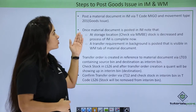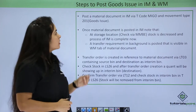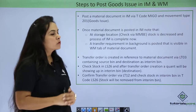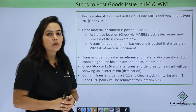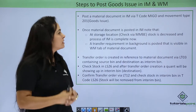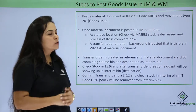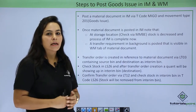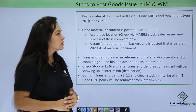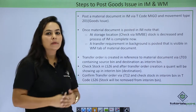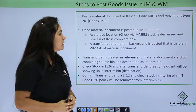Let's look at the steps to post Goods Issue in IM and WM. First, a material document will be posted in IM via transaction code MIGO and movement type 201. Once the material document is posted in IM, the stock at storage location will be decreased and we can verify this in MMBE.